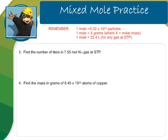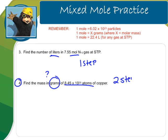Number three is going to be a one-step problem going from moles to liters, so you can find that on the key. Go ahead and try number four on your own — pause the video for a second. Welcome back. Number four starts with atoms and goes to grams, so we know this is going to be a two-step problem. I need to start with atoms, convert to moles in the middle, and then end up in grams.